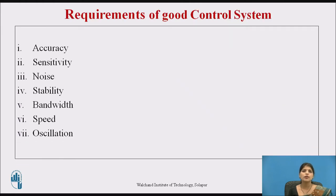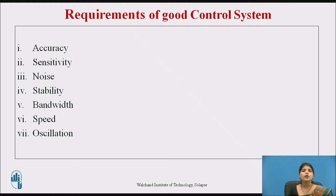These are the requirements of a good control system. First, accuracy should be very high. Second, it should be very sensitive to the input signals. Third, noise — it should be insensitive to noise. Fourth, it should be stable for all variations occurring in the system. Fifth, bandwidth should be very large. Sixth, a good control system should have high speed — that is, the output should be produced as fast as possible. Finally, the oscillation of the output should be constant.